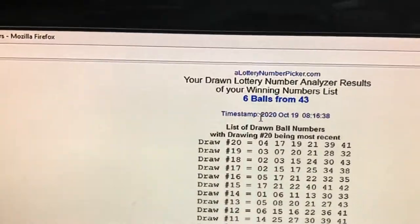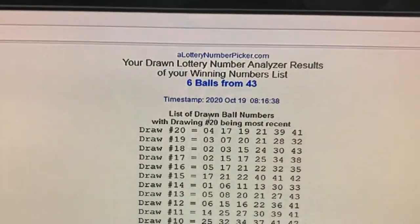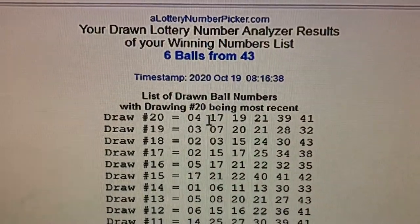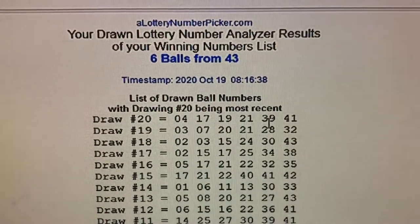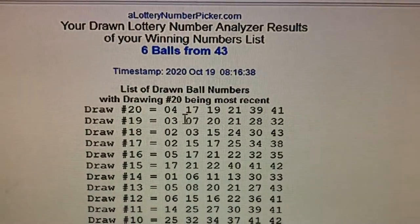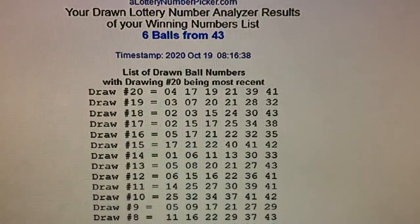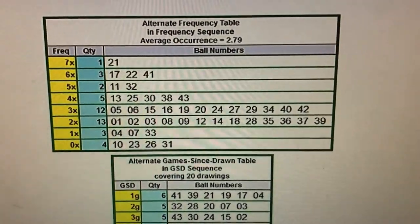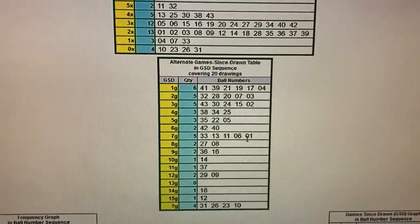You should be getting this kind of window: six balls from 43, drawing 20 being most recent. You must see 20, this is the most recent one. You're going to need to print this out, this table and this table.